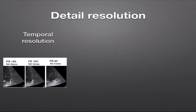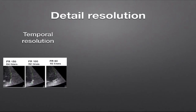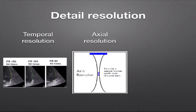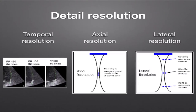To summarise detail resolution: temporal resolution relates to frame rate — the greater the frame rate, the better the ability to image a moving structure, and differences between 40 and 80 frames per second become apparent when slowing down and making measurements. Axial resolution is the ability to separate structures along the direction of ultrasound travel. Lateral resolution is the ability to separate two structures on the plane perpendicular to the direction of ultrasound travel.